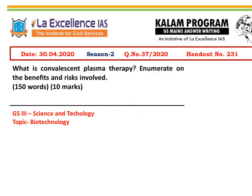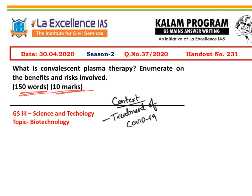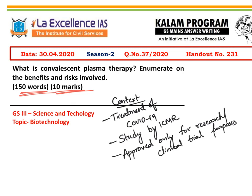Let us now look at today's question: What is Convalescent Plasma Therapy? Enumerate the benefits and risks involved. This question is from General Studies Paper 3, from the topic of Science and Technology, subtopic of Biotechnology. The question carries 10 marks and must be answered in 150 words. The context is that Convalescent Plasma Therapy has been in use for COVID-19 treatment, but 2 days back, the Health Ministry asked states not to conduct this therapy until an ICMR study on its efficacy and risks is completed. So it is not approved for treatment, only for research or clinical trial purposes.